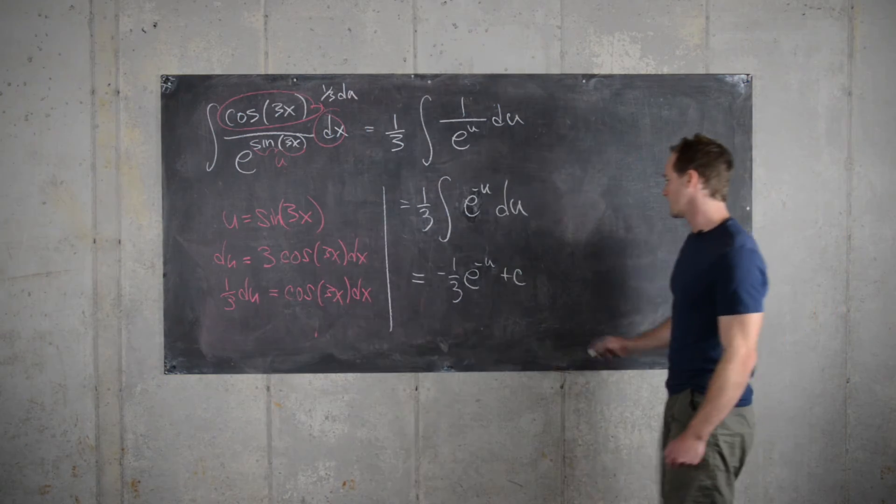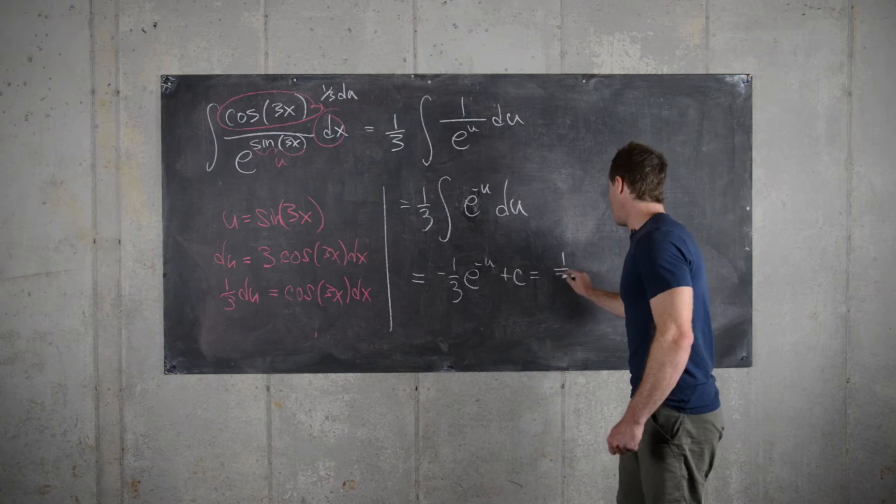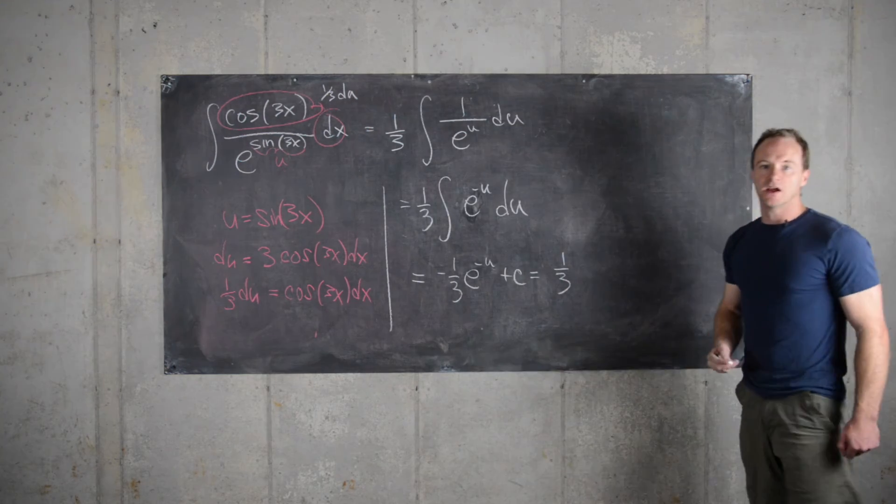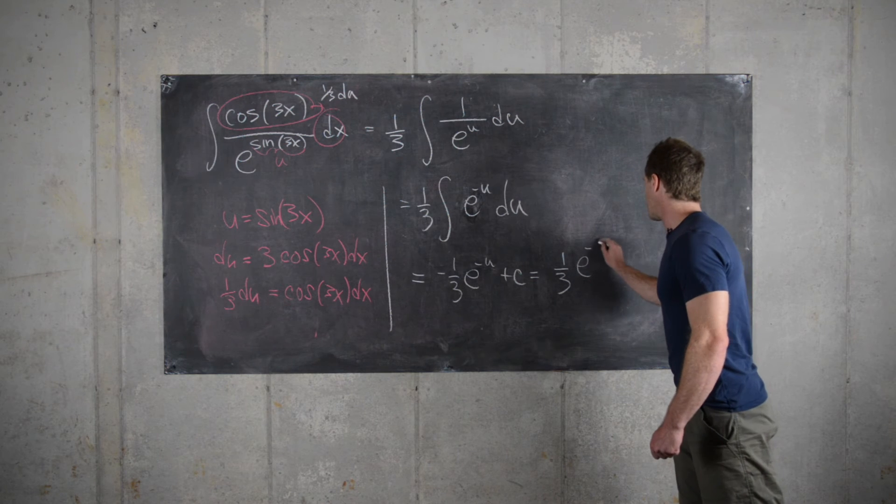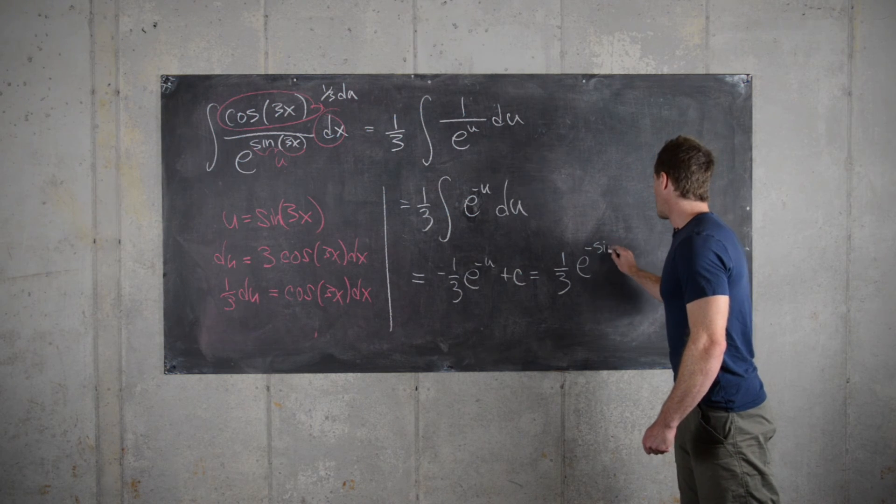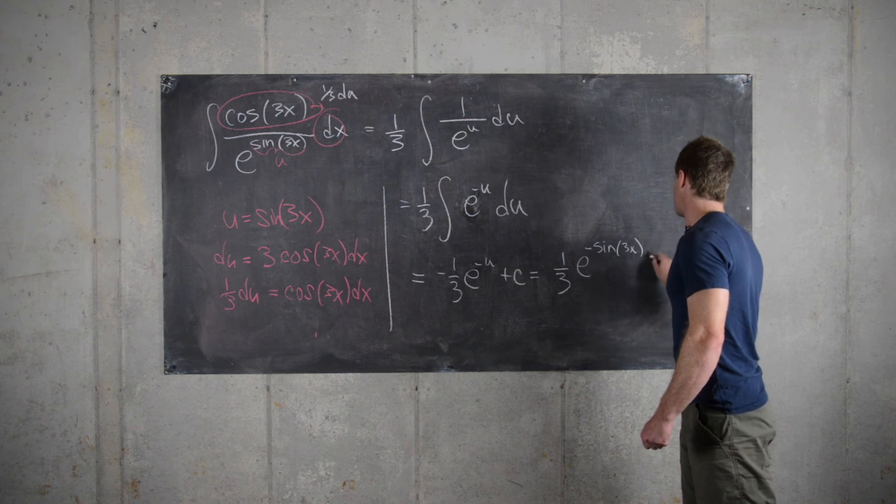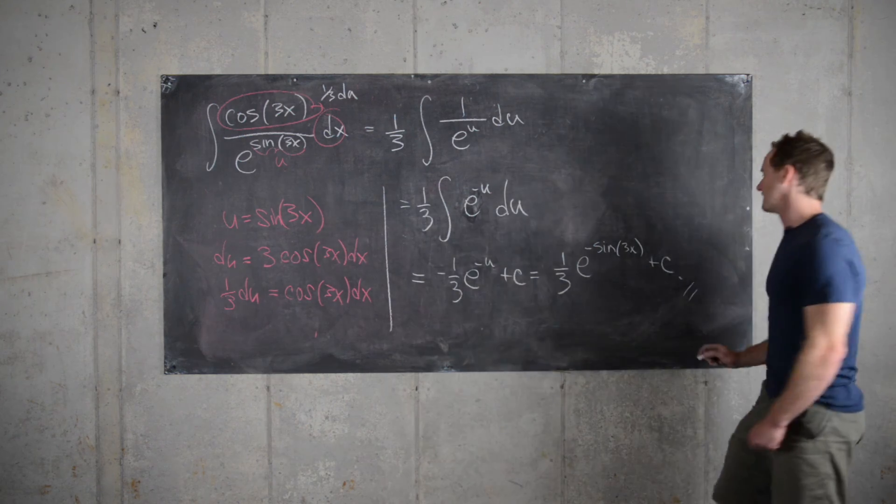Okay, great. And then finally this gives us minus 1 third and then we can substitute back in. So this will be e to the minus sine of 3x plus our constant of integration. And that's our final answer.